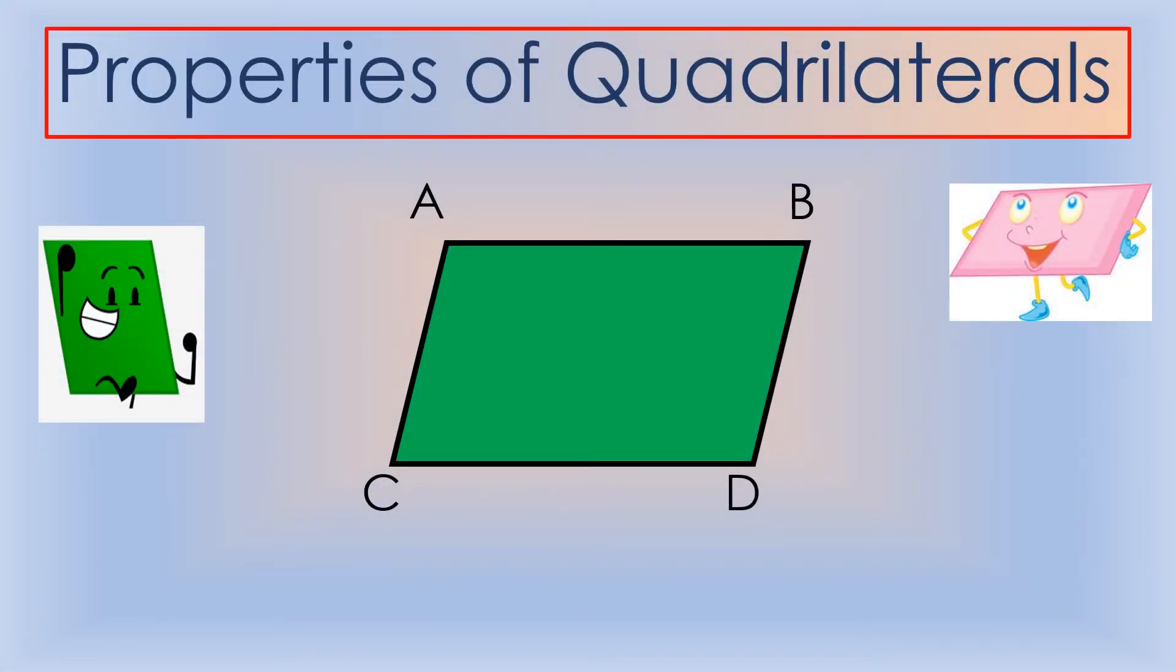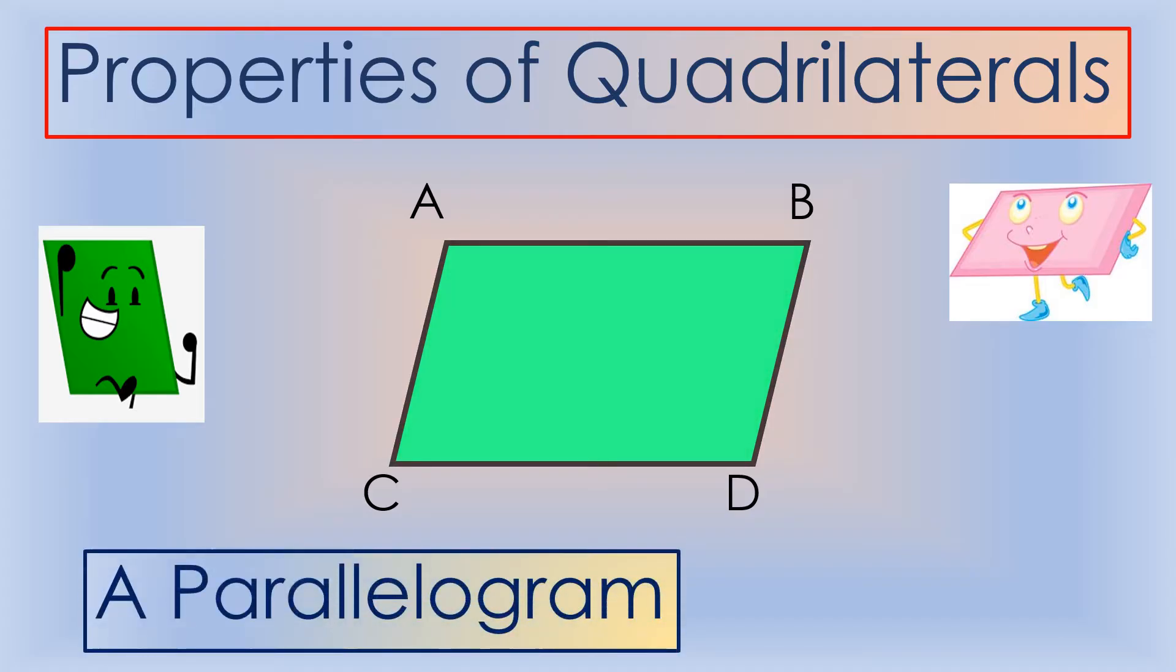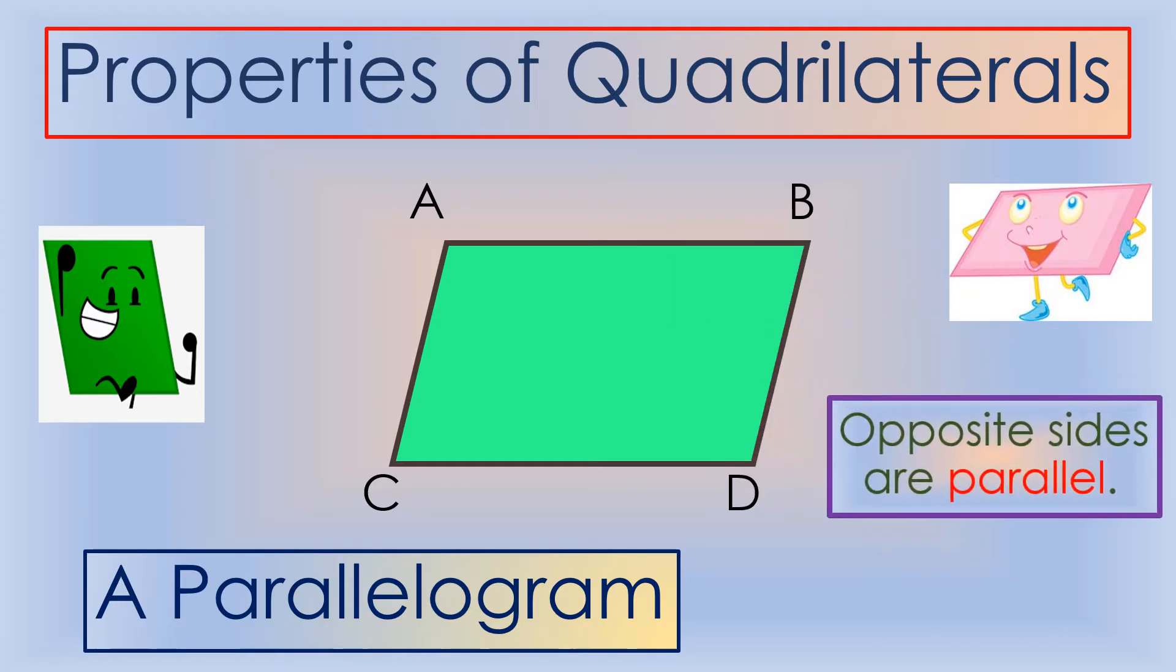Let's take a closer look at the types of quadrilaterals and their properties. Let's begin with a parallelogram. Notice that opposite sides of a parallelogram are parallel. You can clearly see that side AB is parallel to side CD, and side AC is also parallel to side BD.